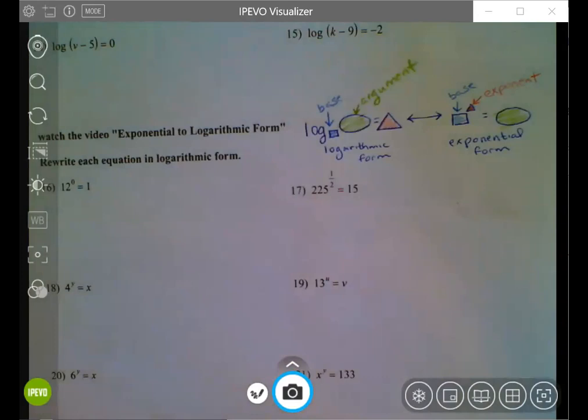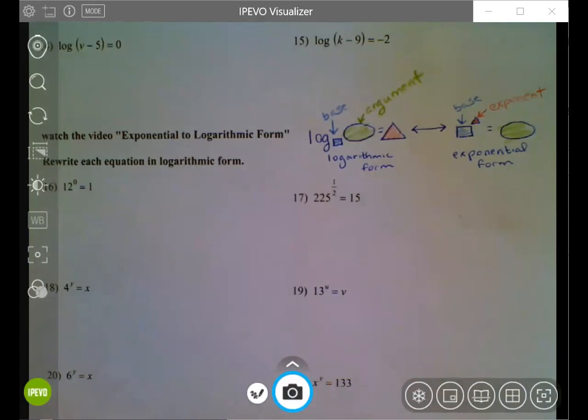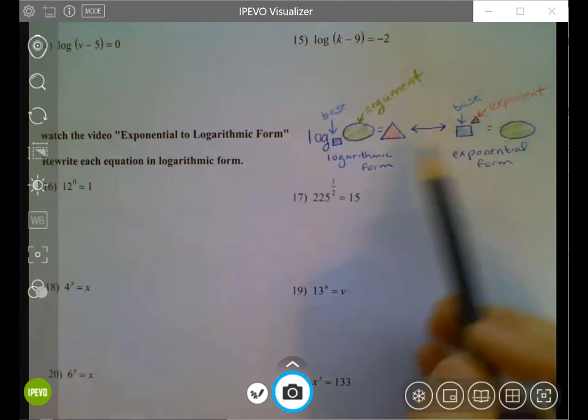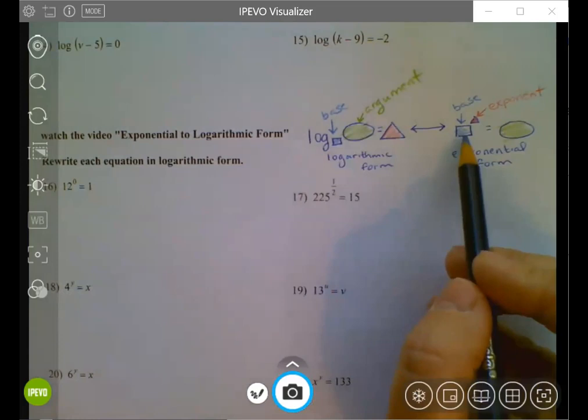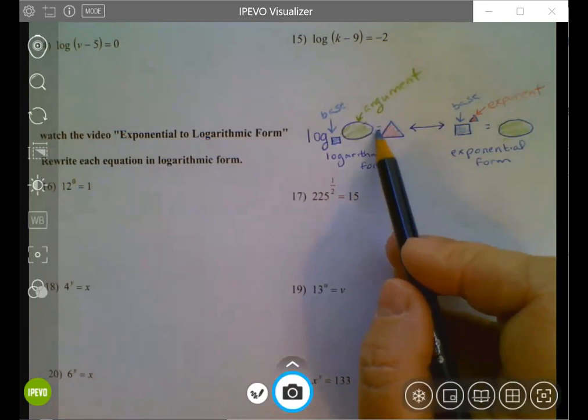So I've just redrawn the same little graphic here with the color coding. The argument here is in green ovals. It's the answer you get in the exponential form, and it goes inside the logarithm. The base is in purple. That's the base of the logarithm or the base of the exponential form, and then the exponent in this form becomes the answer in logarithmic form.